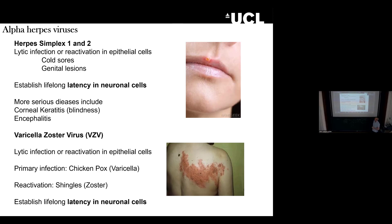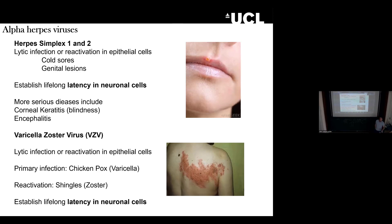The other alpha herpes virus is varicella zoster virus — the virus that causes chickenpox, or upon reactivation, shingles. This virus infects epithelial cells and we see a rash. We acquire the virus normally as children, if you haven't had the vaccine. Primary infection leads to the establishment of latency in neuronal cells. You may then see bouts of reactivation under certain clinical situations — that's what we see as the zoster rash. It can be self-limiting but can also be very painful, or even life-threatening in certain situations. Latency and reactivation are really important for the pathogenesis of these viruses.